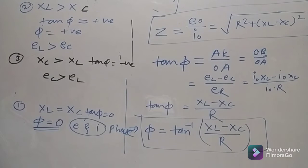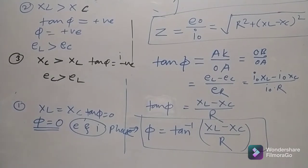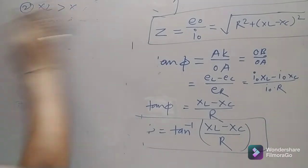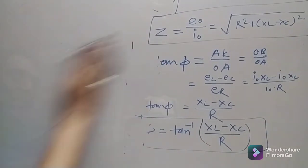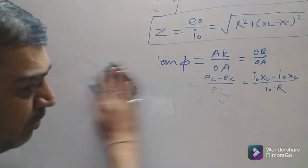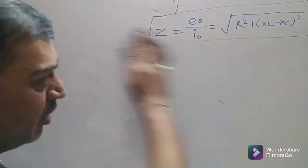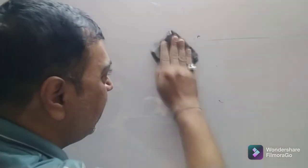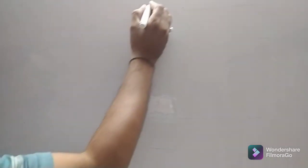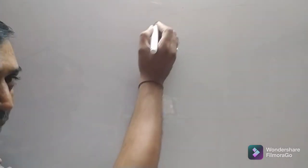The next three points cover power in AC circuits applied to resistors, capacitors, and inductors. That part is kept aside this year due to COVID-19, so we move directly to the next topic: LC oscillations.